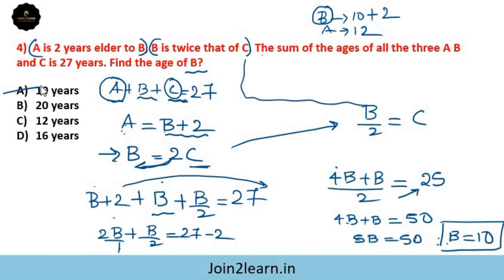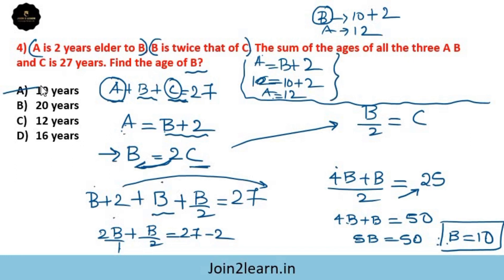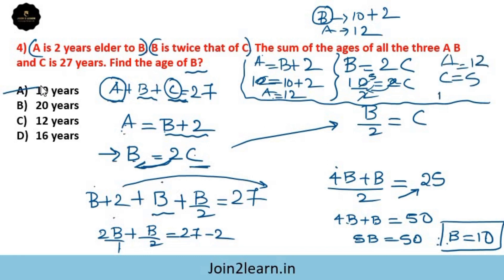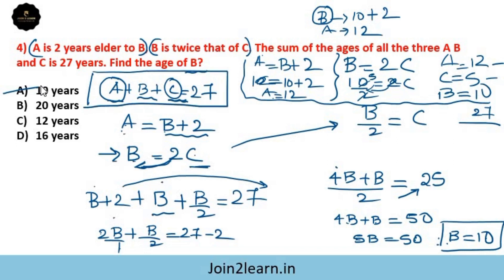Cross-verifying: A equals B plus 2, and B equals 10, so A equals 12. B equals 2C gives 10 equals 2C, so C equals 5. Check: A plus B plus C equals 12 plus 10 plus 5 equals 27. The equation is satisfied, confirming our answer.